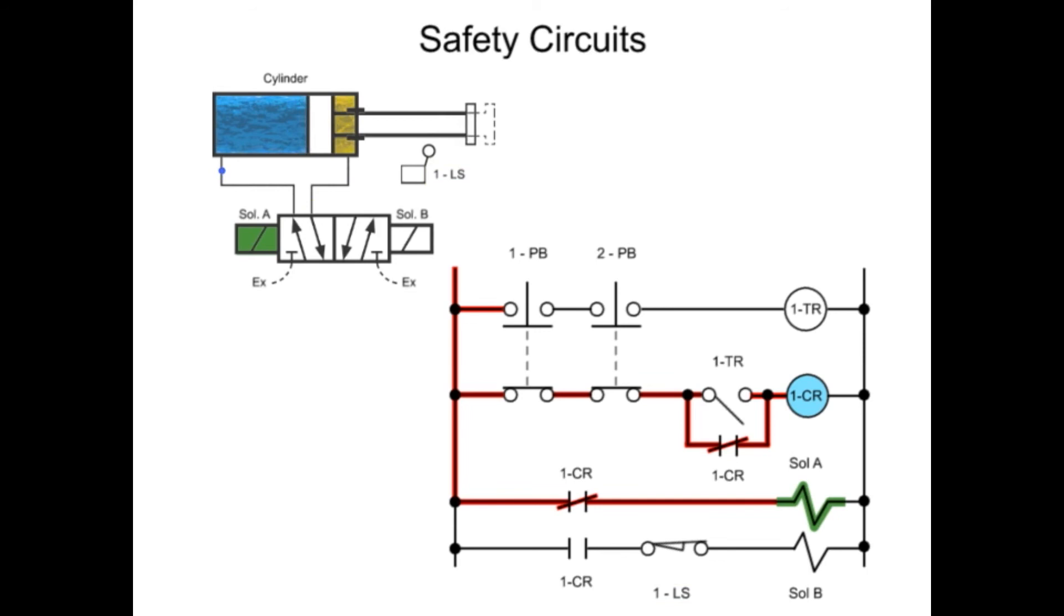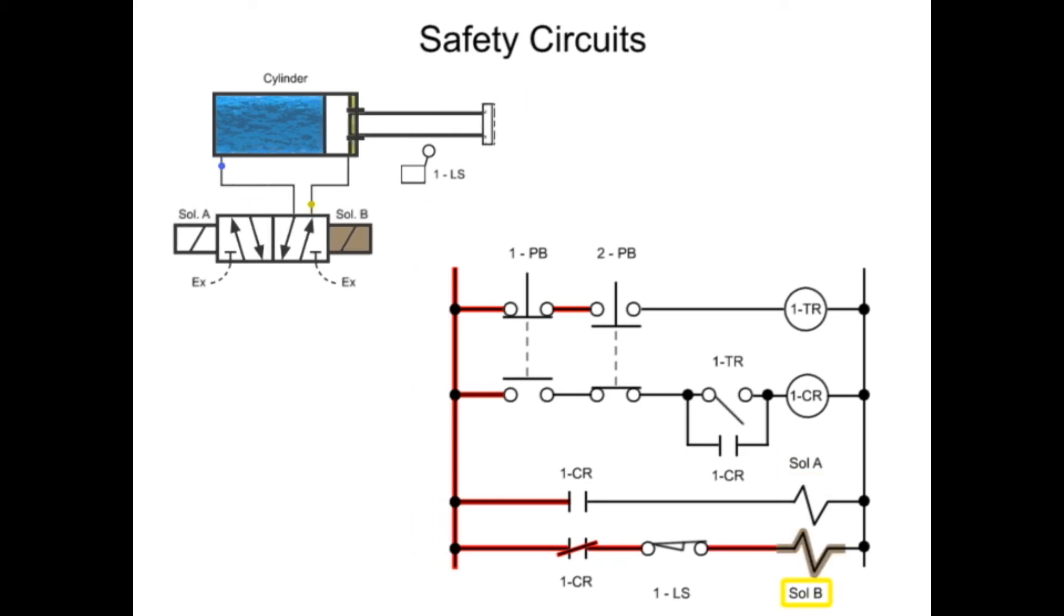At this point in the cycle, the cylinder will remain extended indefinitely until at least one push button is released. If one push button is released, the control relay will lose power, which causes 1CR to remove power from solenoid A and connect power to solenoid B. This shifts the valve, allowing the rod end of the cylinder to fill with fluid and retract the cam.